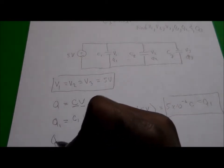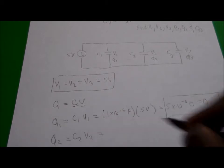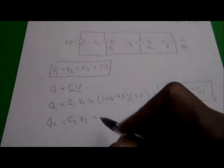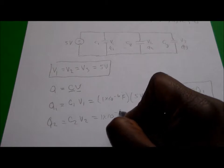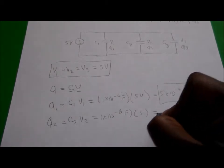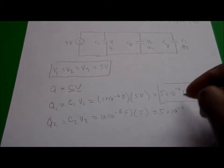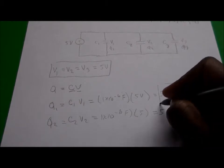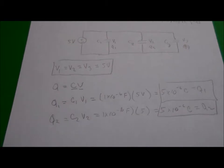For Q2, we take C2 times V2, and we'll find our charge across that C2 capacitor. Same thing, right? 1 times 10 to the minus 6 farads times 5, which is also equal to 5 times 10 raised to the minus 6 coulombs, which is the charge across the plates of capacitor number 2.